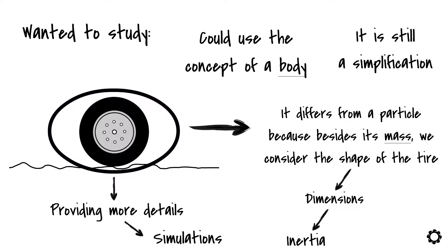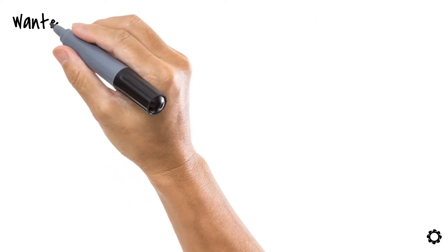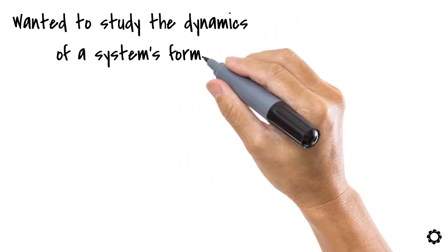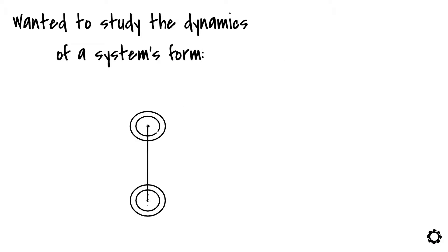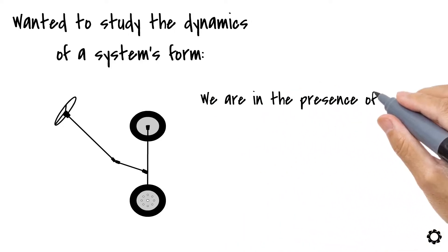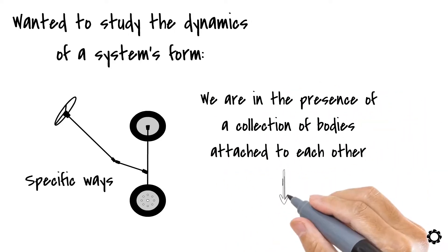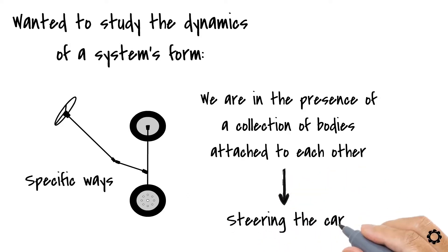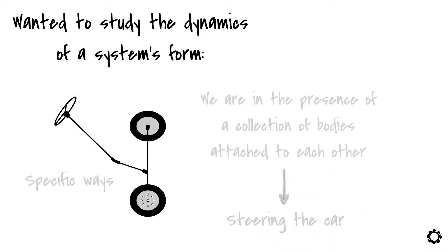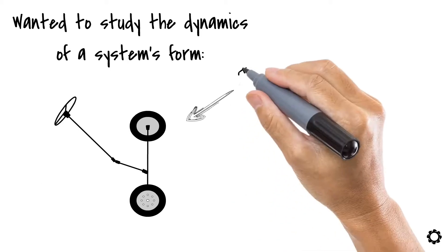Now let's step it up a little bit. What about if I wanted to study the dynamics of a system formed by the car's steering system and the two front tires? Well, in this case, we are in the presence of a collection of bodies attached to each other in very specific ways to accomplish a mission – steering the car. This collection of bodies linked together is what we call a multi-body system.